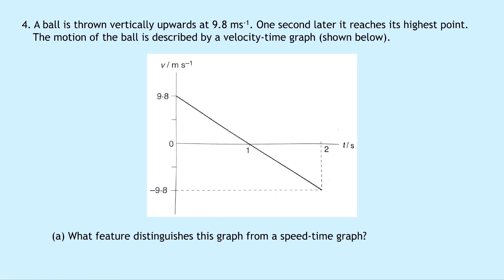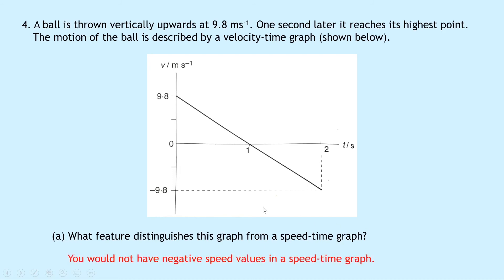Question 4 says that a ball is thrown vertically upwards at 9.8 metres per second. One second later, it reaches its highest point. The motion of the ball is described by a velocity time graph shown below, with velocity in metres per second and time in seconds. After 1 second, it has reached its highest point where the velocity becomes zero. Part A asks what feature distinguishes this graph from a speed time graph — it's the fact that you would not have negative values in a speed time graph, showing motion in the opposite direction.